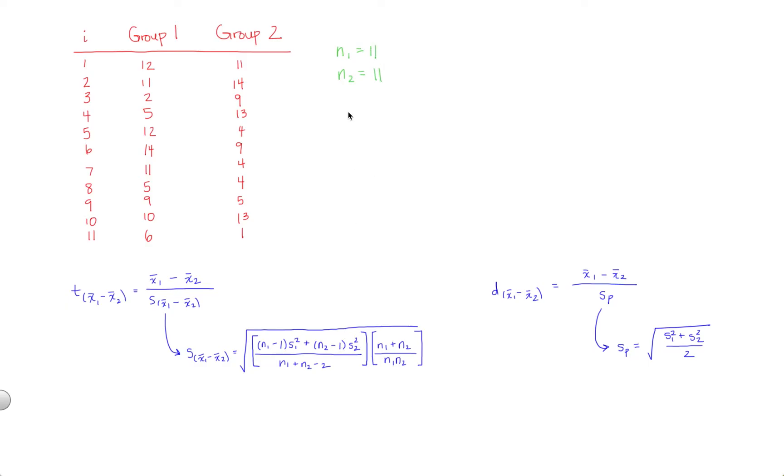So we already have two out of the six things we need. I will note, by the way, that even though oftentimes you will see equally sized groups, it does not have to be that way. It's perfectly fine for you to have a few more people in group one than group two, for example, or vice versa. So don't get thrown off by that. Just make sure to plug in the appropriate values in the appropriate places when the time comes.